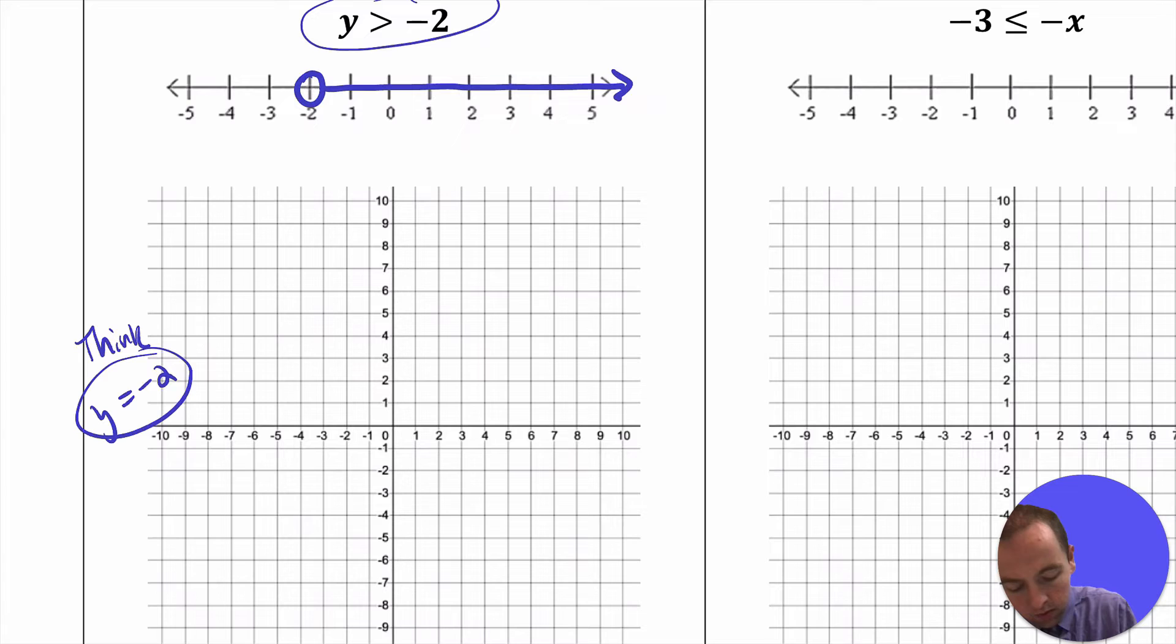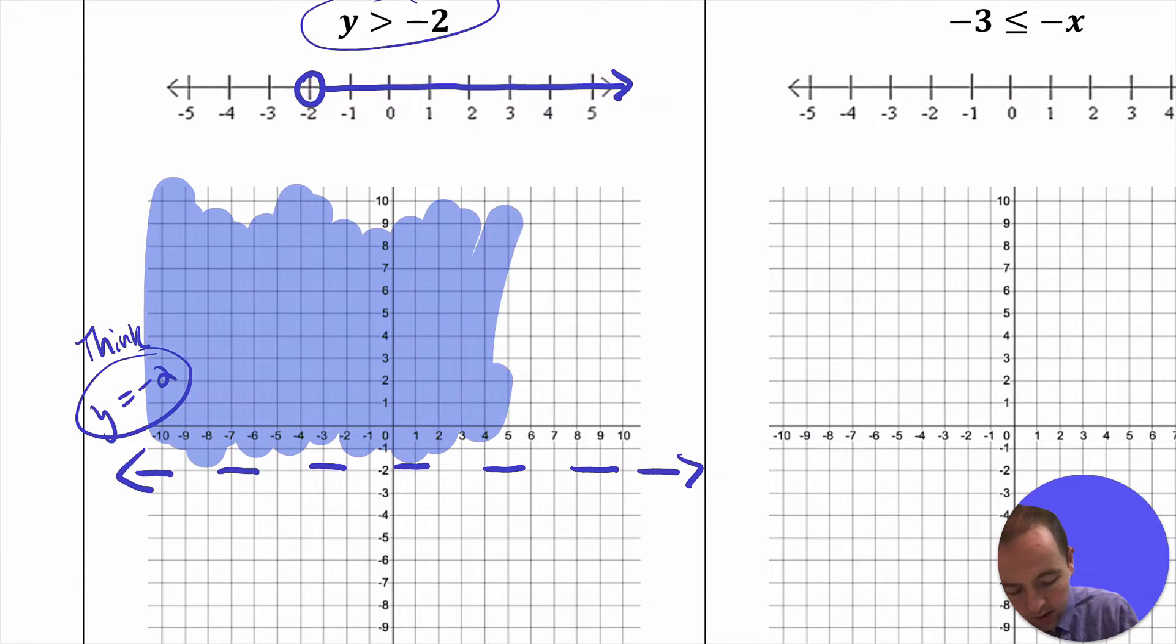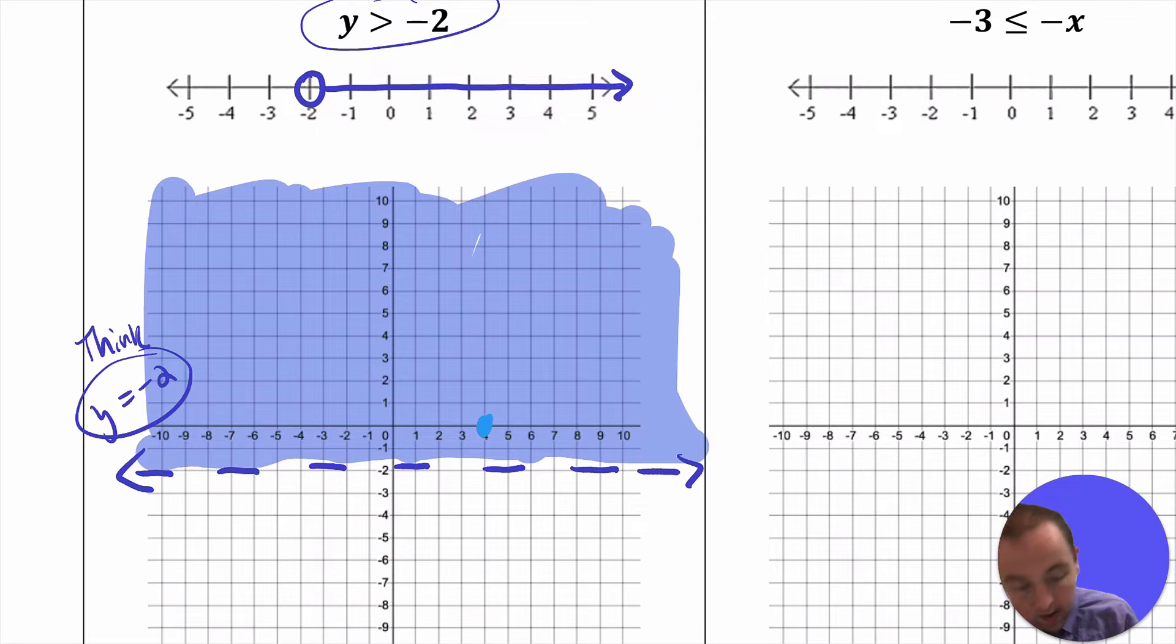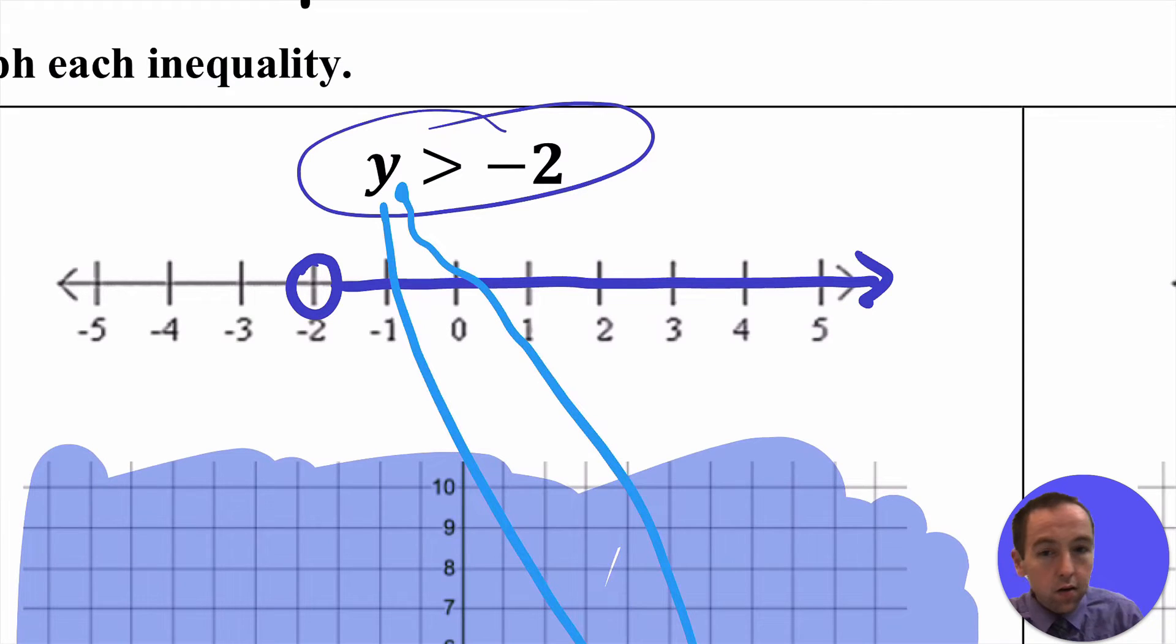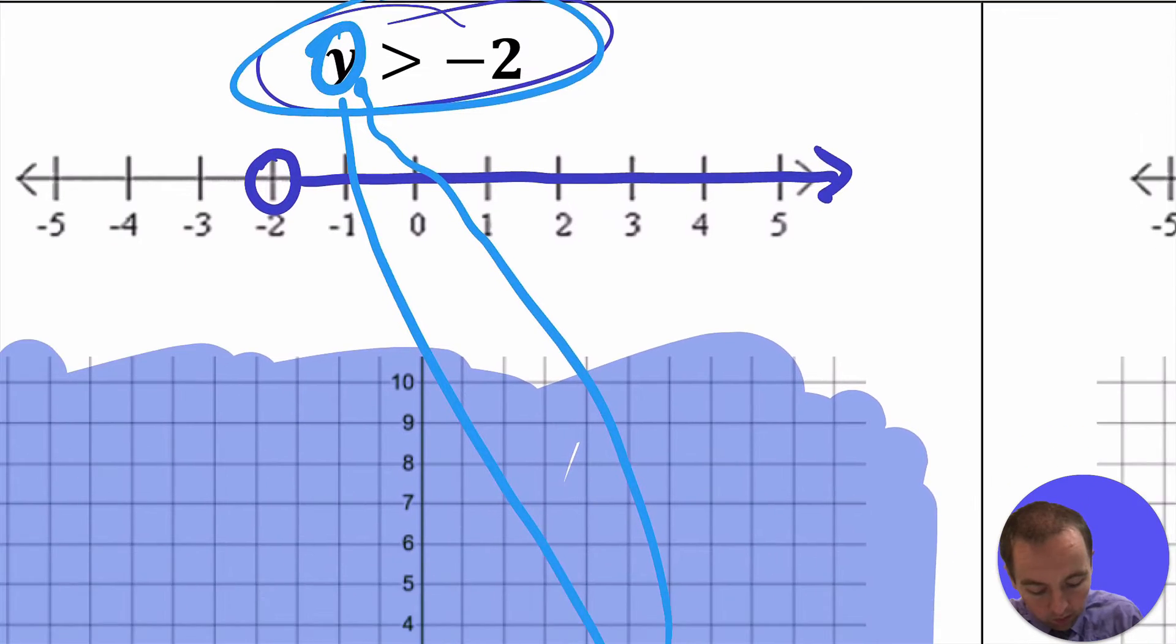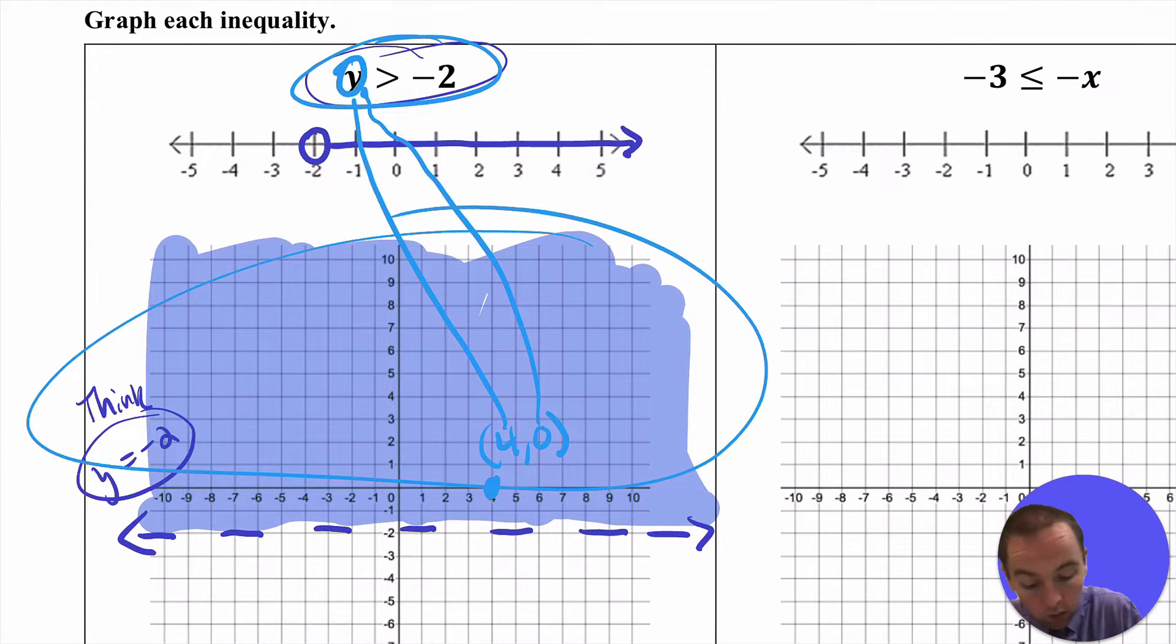But really what we're trying to graph is y is greater than negative 2. And so because we don't want y to actually be negative 2, we use what's called the dashed line, or if you wanted to dot it, just don't make it solid. And then if we want y to be greater than negative 2, it ends up having to be all of these ordered pairs right here that I shade in. The reason why this makes sense is because any of the ordered pairs in that shaded region, so like this point right here is 4, 0, then if you plugged in 4 for x and 0 for y into that relationship, it should make it a true number statement. The 0 can go in because that was the y value, and then you get 0 is greater than negative 2, and that's a true number statement. So for any of the ordered pairs in that region, y is always greater than negative 2.